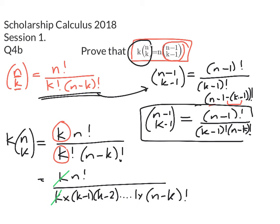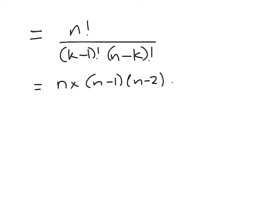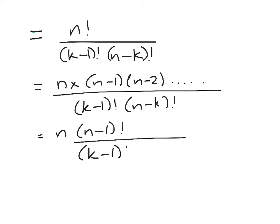Make sure you've written all of this down before we move on. So here we're going to end up with n factorial times (k-1) factorial times (n-k) factorial, which is equal to n times (n-1), (n-2) and so on over (k-1) factorial (n-k) factorial. And that equals n times (n-1) factorial over (k-1) factorial (n-k) factorial.